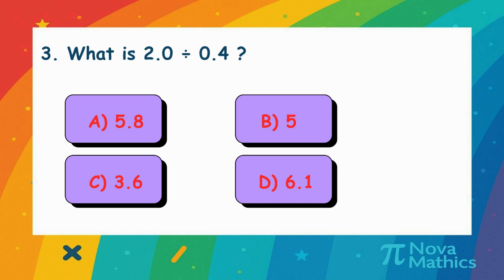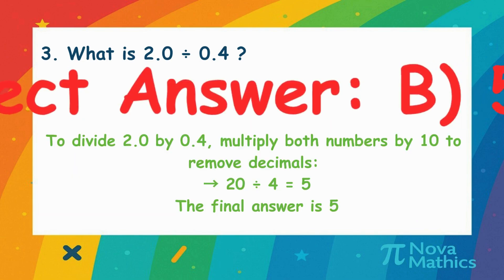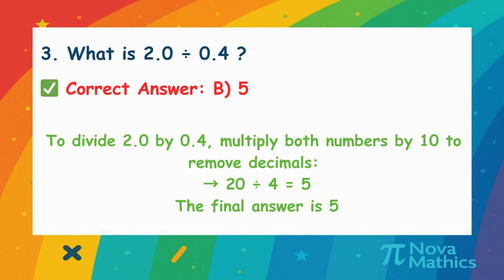3. What is 2 divided by 0.4? We want to divide 2.0 by 0.4. Multiply both by 10 to make them whole numbers. 20 divided by 4 equals 5.